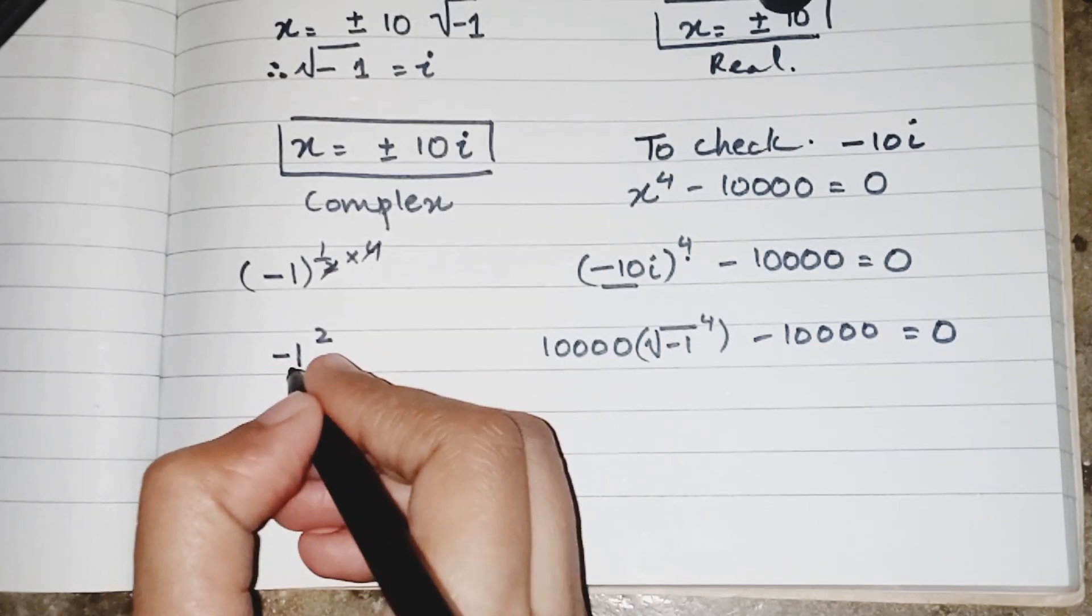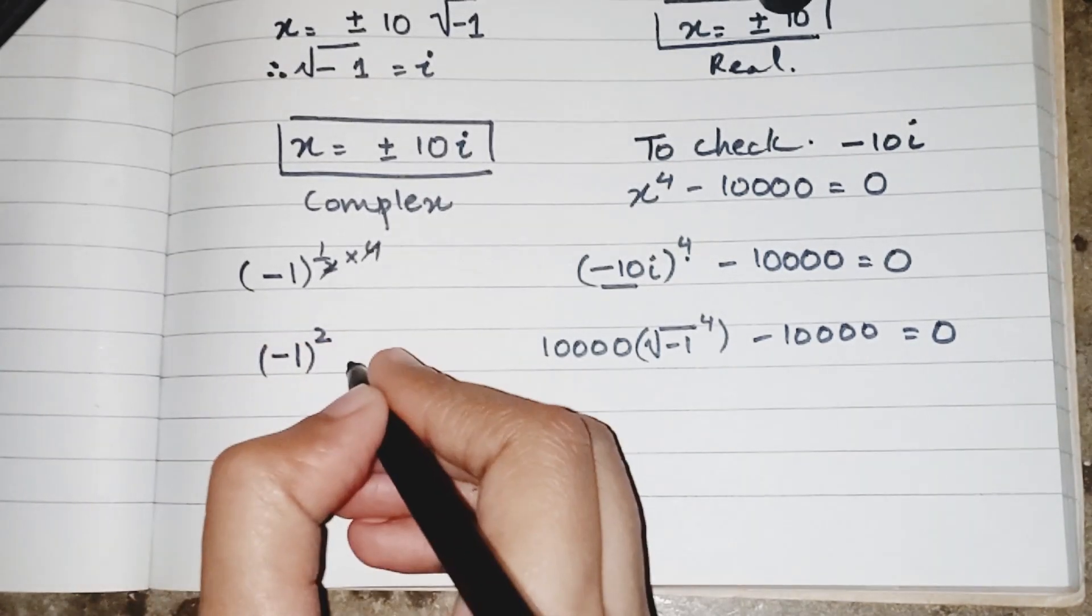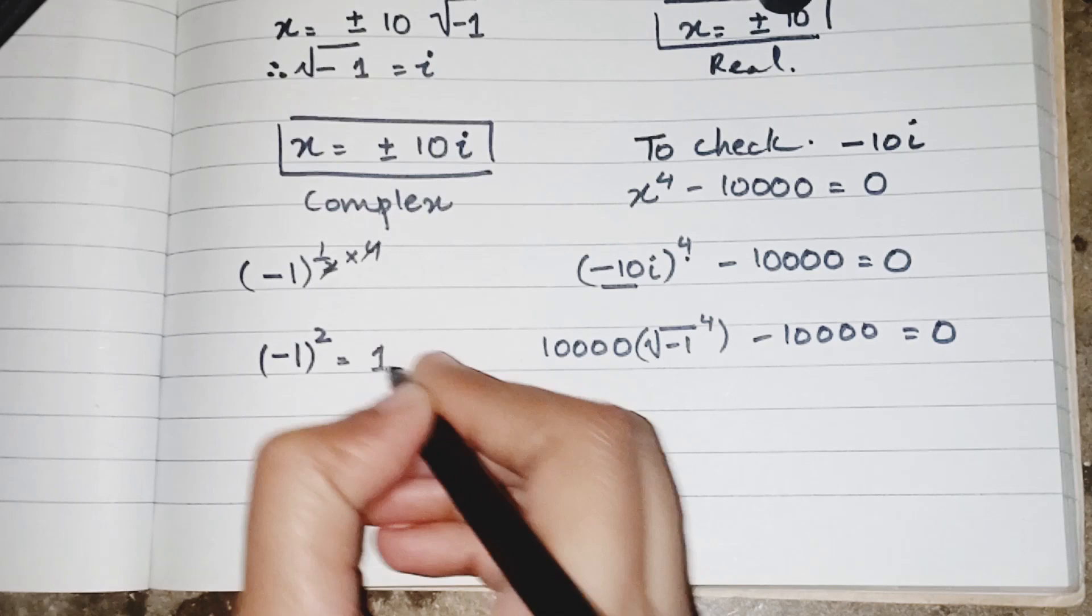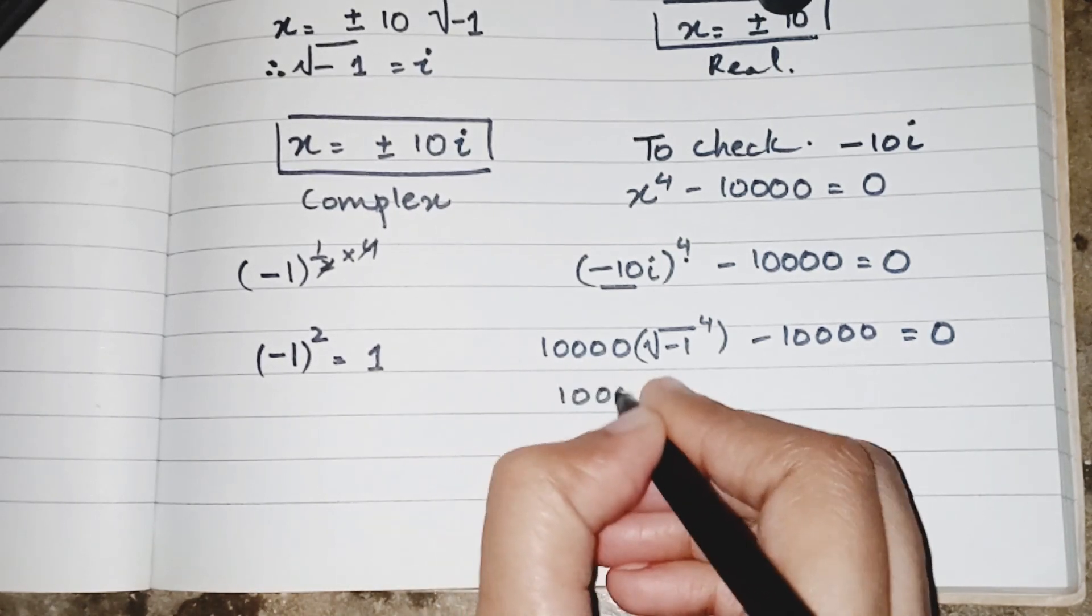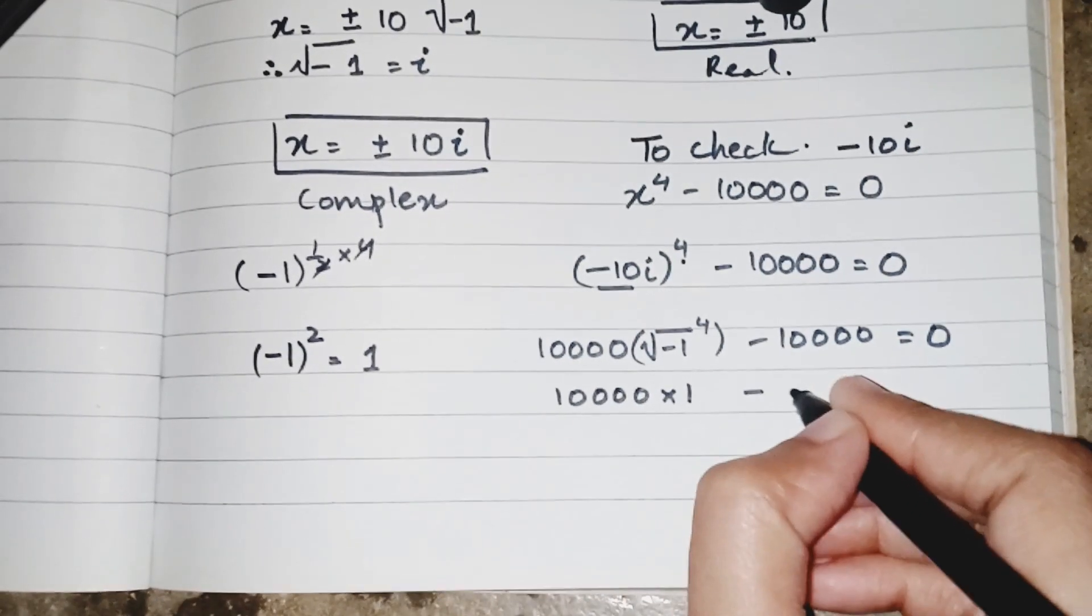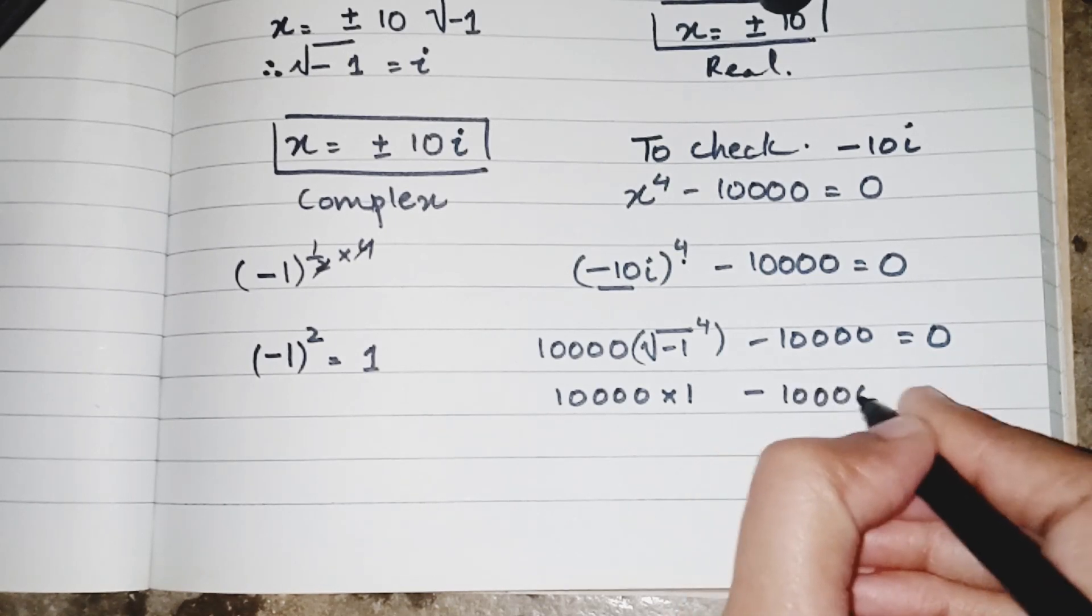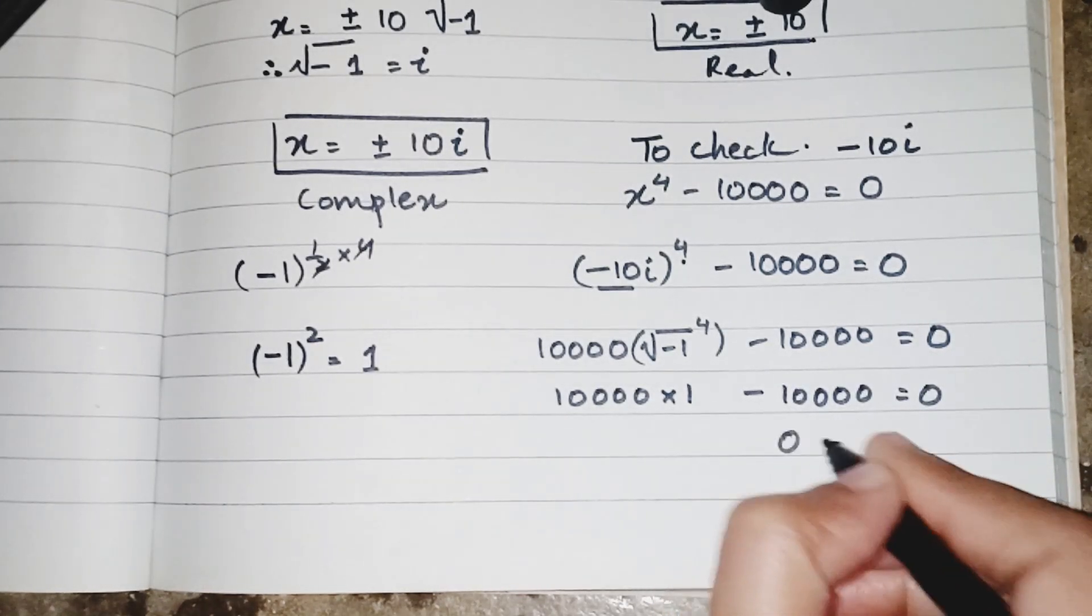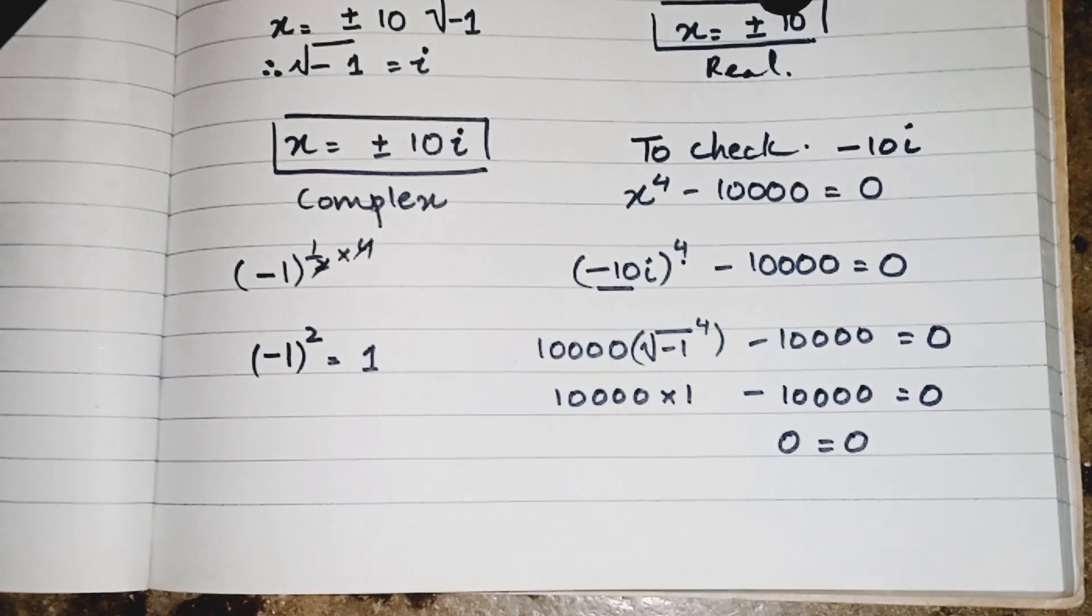When we have the minus 1 power as 2, we can say that it will be equivalent to 1. So 10,000 multiply by 1 minus 10,000 equals 0, 0 equals 0, and our answer is justified.